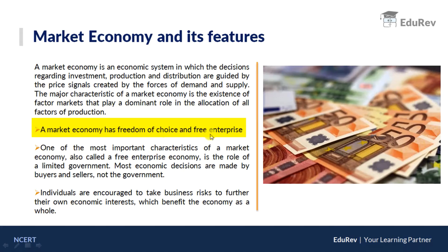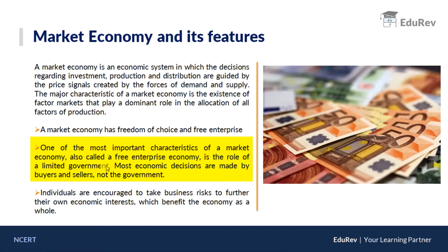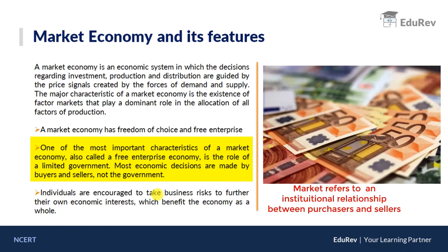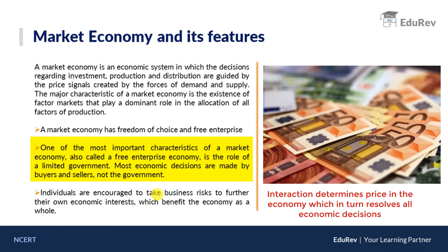Market economy has freedom of choice and free enterprise — anybody can enter and anybody can exit. One of the most important characteristics of a market economy, also called a free enterprise economy, is the role of limited government. The central planner or government doesn't play much role; they let the market play on its own. Most economic decisions are made by buyers and sellers — not necessarily in a physical or geographical market, but also a digital or international market. Buyers and sellers interact, a deal is formed, prices get determined, and all economic decisions find answers.